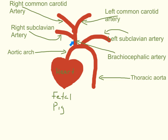The brachiocephalic artery on the fetal pig will have three branches coming off of it: the right subclavian artery going to the right arm, and the right and left common carotids going up along each side of the throat area. So on the fetal pig we have two branches off the aortic arch versus three on the human, and the brachiocephalic carries those additional blood vessels. Do pay attention to this difference between the fetal pig and the human heart.